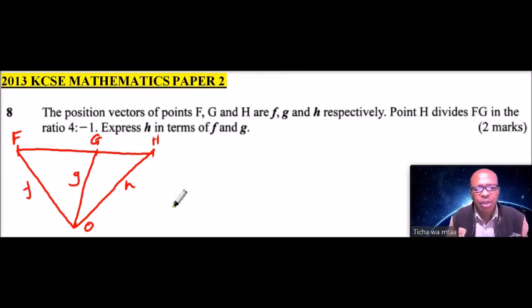So using the ratio theorem, we have been given the ratio is 4 is to minus 1. In real sense, it means that this is 3 and this is 1. But because we are saying, actually here we can say F, H divides F,